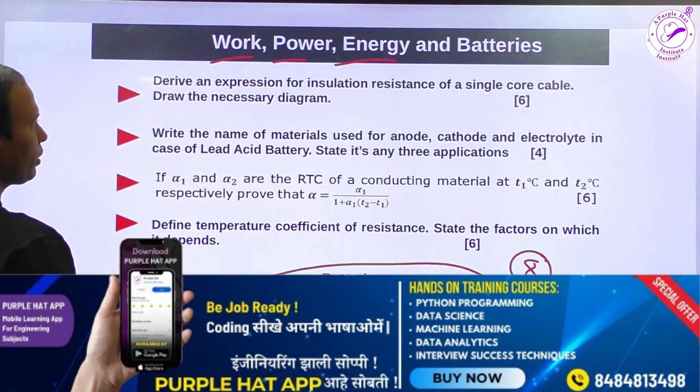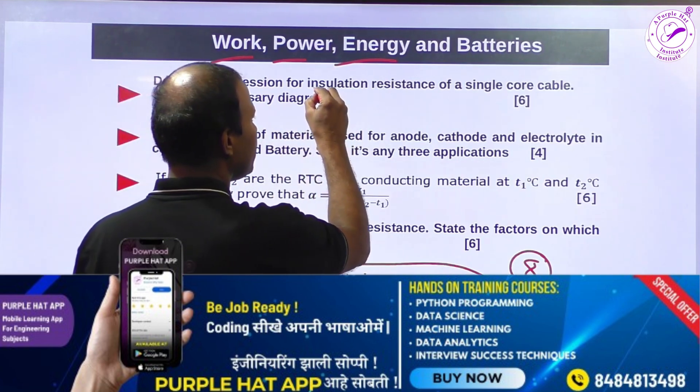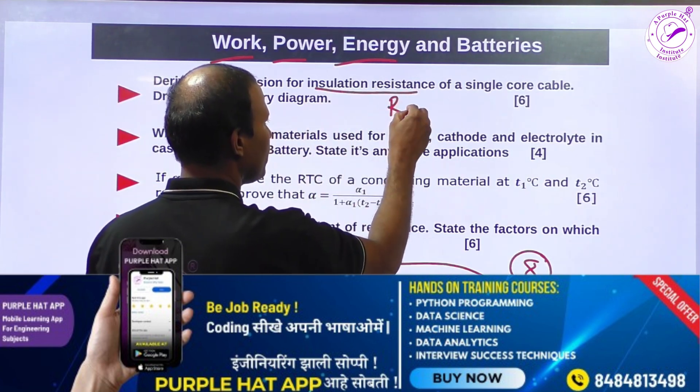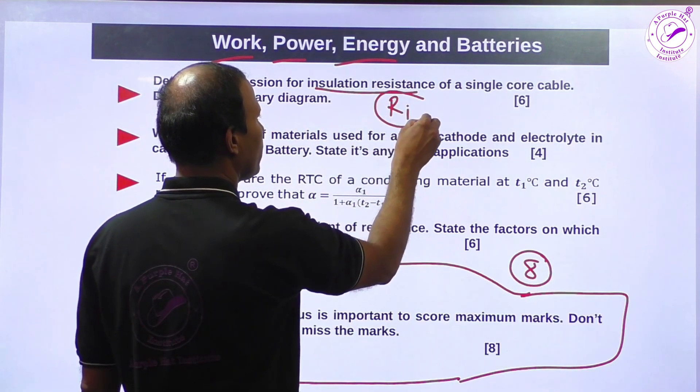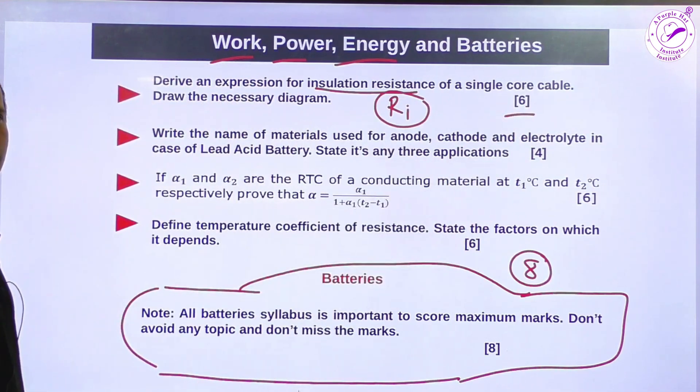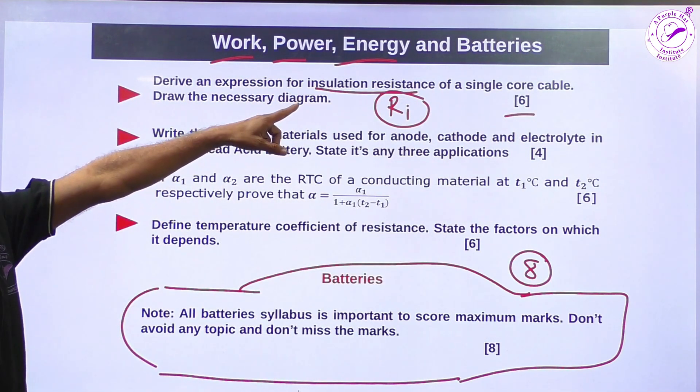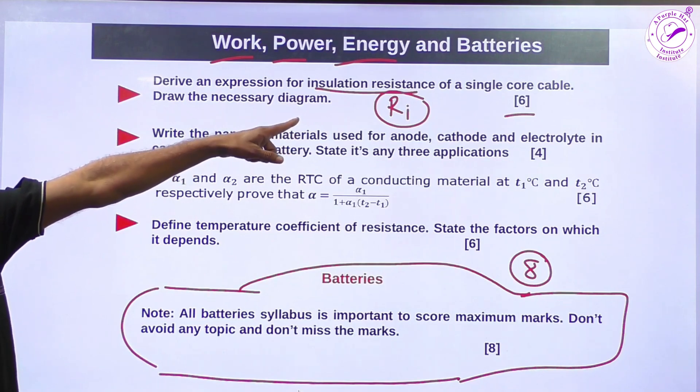I will suggest derive the expression for insulation resistance. Yes, insulation resistance, this expression is important for six marks for single core cable. The current should not leak through the insulation, so we find this insulation resistance.